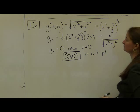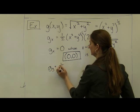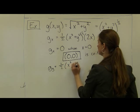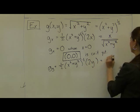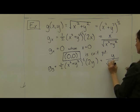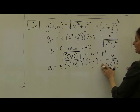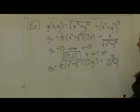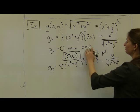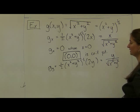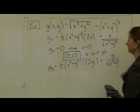Taking the partial derivative with respect to y gives one-half times (x² + y²) to the negative one-half times 2y, which simplifies to y divided by √(x² + y²). We get the same information: (0, 0) is a critical point because the partial with respect to y is also not defined there. The partial with respect to y equals zero when y equals zero, but if both x and y are zero, neither partial is defined. This is an example where the critical point falls into category 2.